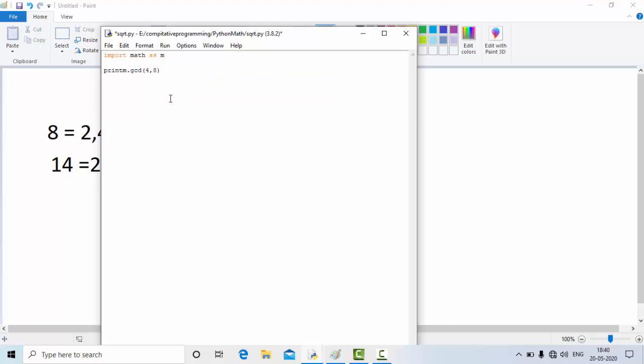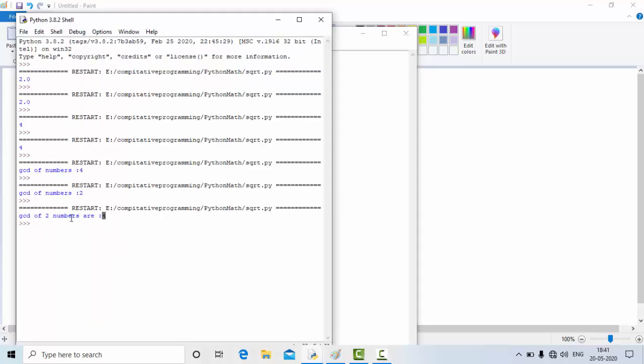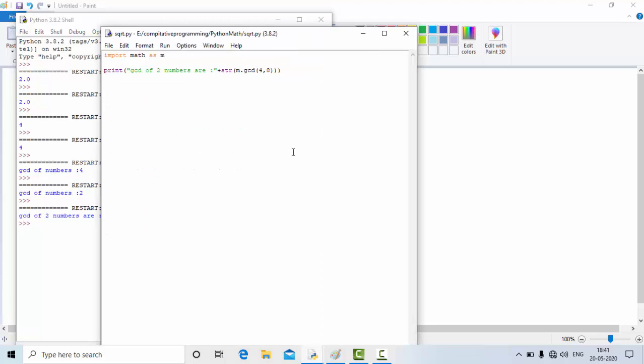Now I am planning to print it onto the console, so I will be using print. It would be good if I give meaningful information in the beginning, so I'll do "GCD of two numbers". Once it is done, convert your GCD value to string so that I can directly append it here. Now if I run this, I should get value 4. You can see GCD of 4 and 8 is 4.